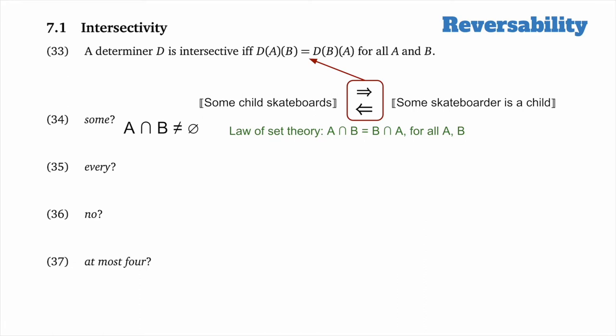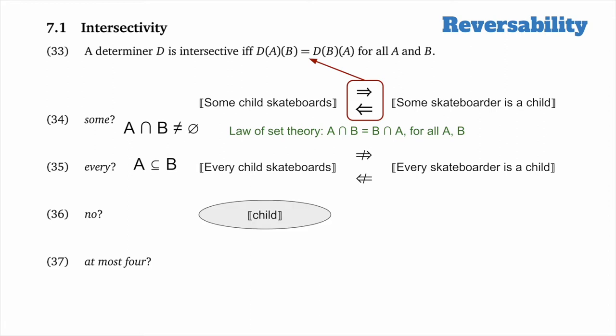Let's contrast that with every. You might already have the intuition that every will not be intersective because it's built around the relation of subset, and subset is not reversible. If every were intersective, then 'every child skateboards' would entail 'every skateboarder is a child' and the reverse. But that's clearly not correct. Just imagine that the set of children is properly contained in the set of skateboarders — that makes 'every child skateboards' true, but then there would be some skateboarders that were not children, counter-exemplifying 'every skateboarder is a child.' So we have a failure of entailment, and therefore every is not intersective.